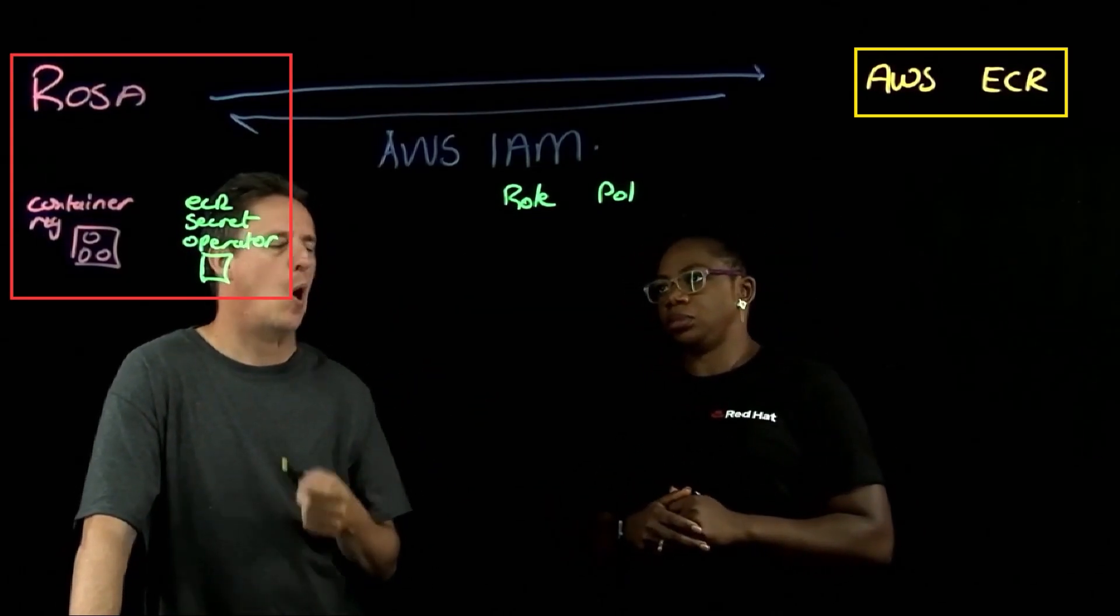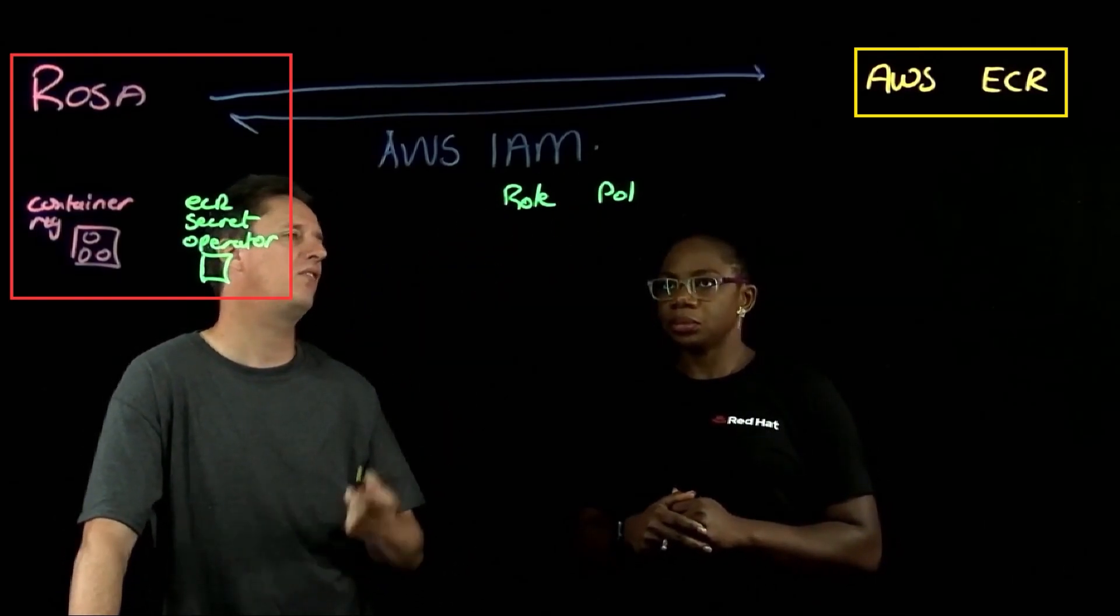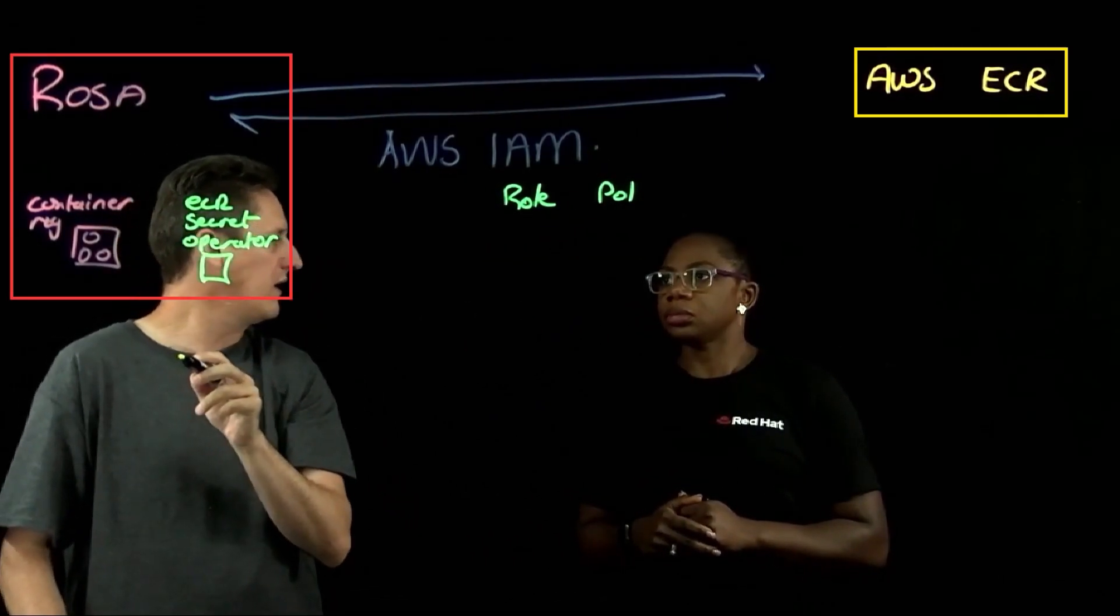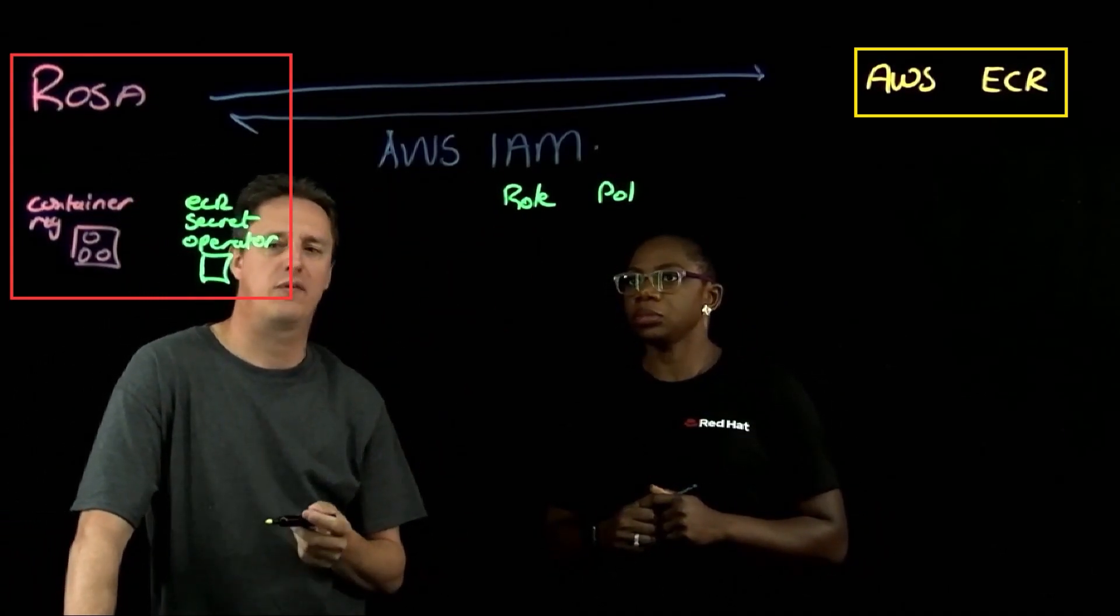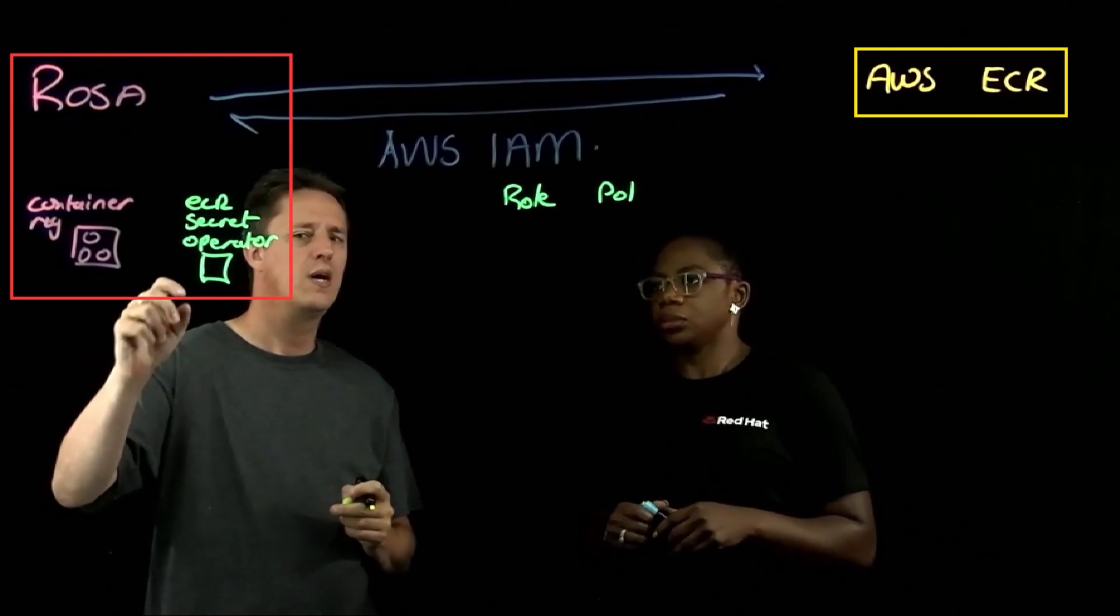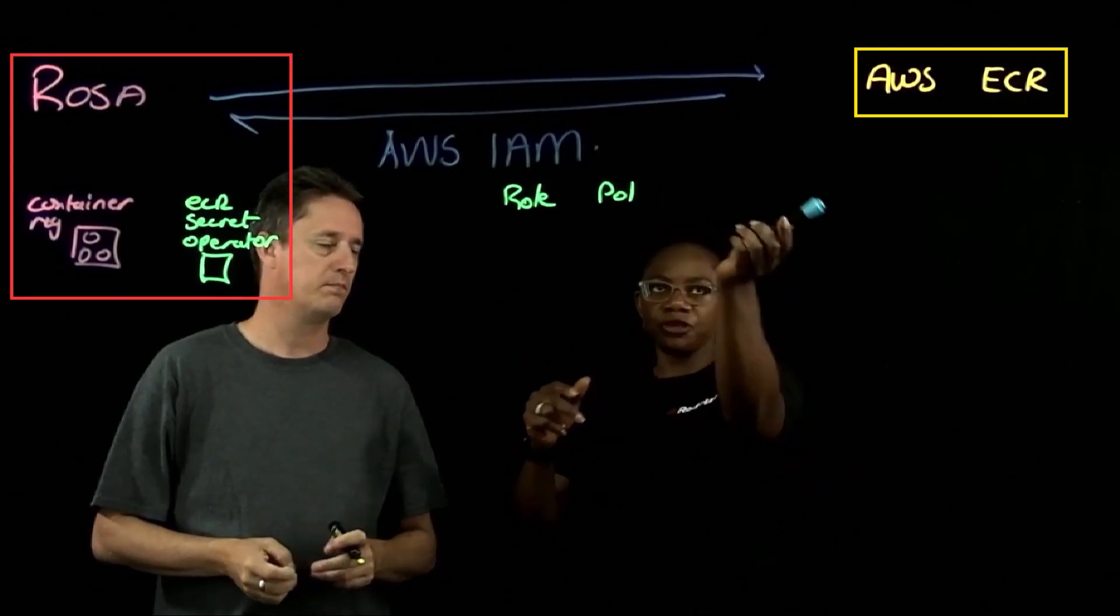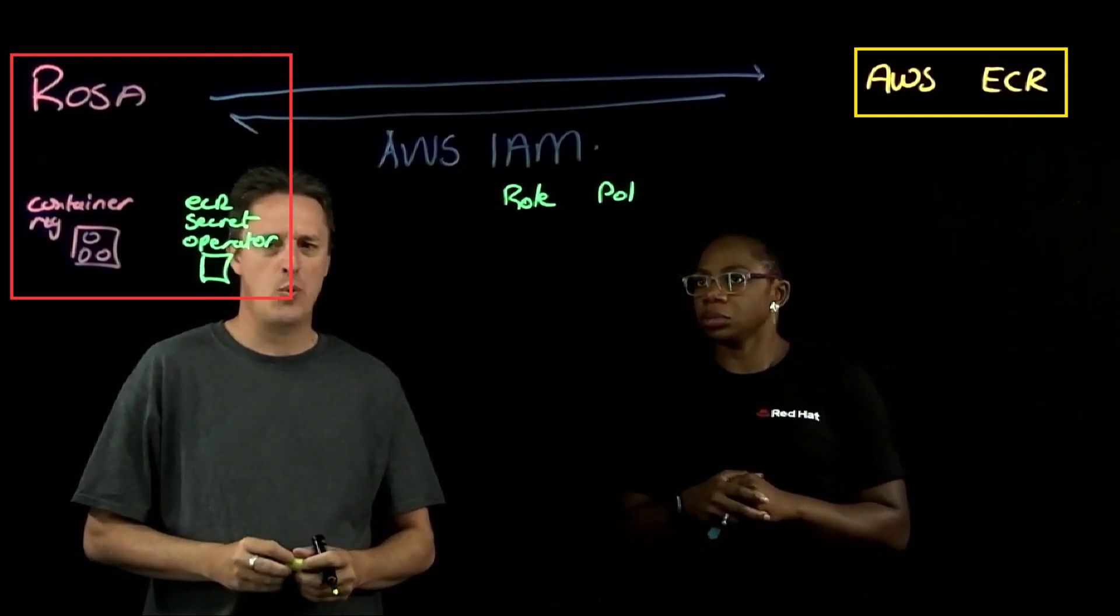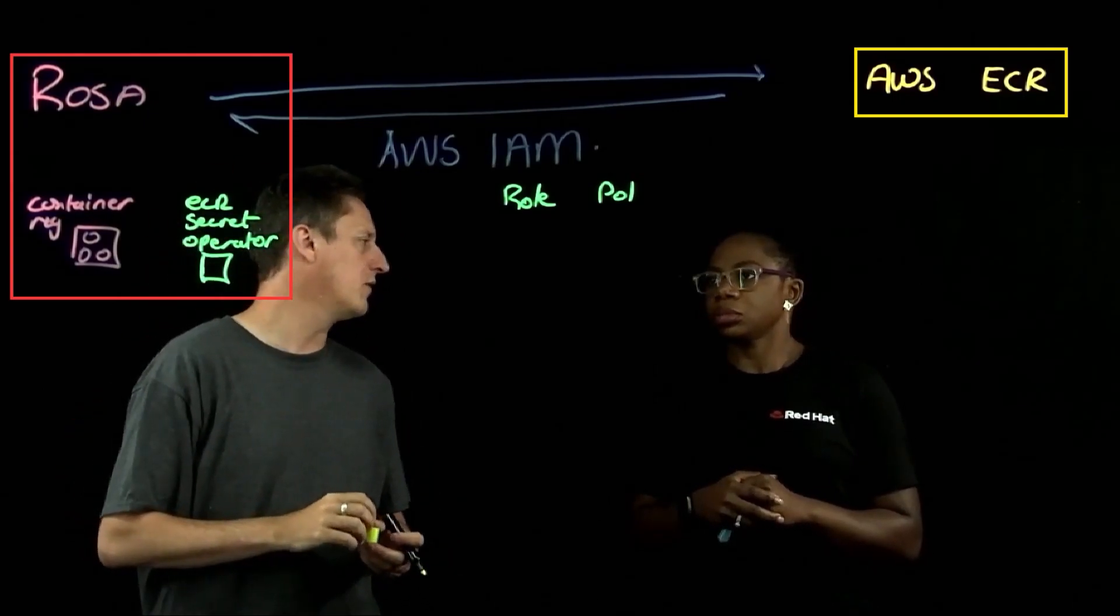So it's essentially an operator that takes the scripted process of reauthenticating to ECR and then pulls that token down and stores it as a secret internally in OpenShift. So every time that I am needing to interact with that registry, this could be anything, this could be like OpenShift source to image S2I, building a container, pushing it there, or pulling in images as you're scaling or as you're deploying workloads. Is it just as simple as going into the operator hub and deploying the operator? And what sort of configuration is needed over here?